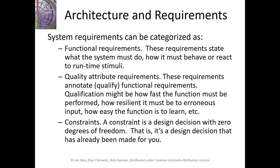In general, system requirements can be categorized as functional requirements, quality attribute requirements, and constraints. Functional requirements state what the system must do — how it should behave or react to some sort of runtime stimulus. For example, if I press this button, the car should move. That's a functional requirement.